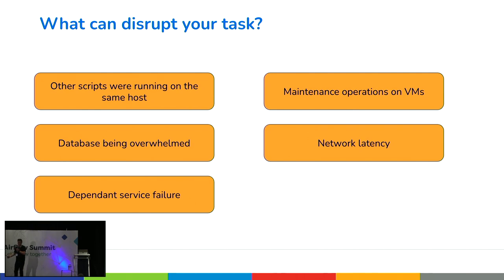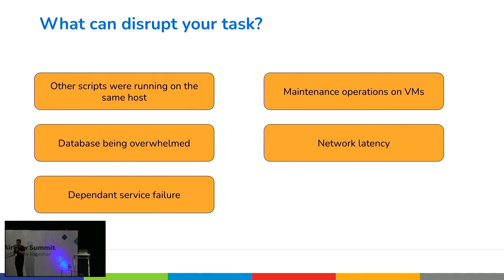The chatty neighbor problem and maintenance operations on VMs are also relevant in cloud environments. There is no safe way to upgrade a Linux kernel without restarting — which impacts running processes. The database can also be overwhelmed as discussed. When a Celery worker fails to send a heartbeat it gets restarted, and all processes started by that worker are gone. Network latency can also impact heartbeating, killing the process. Dependent service failures — like if Spark is gone, your task is gone — are also obvious failure points.